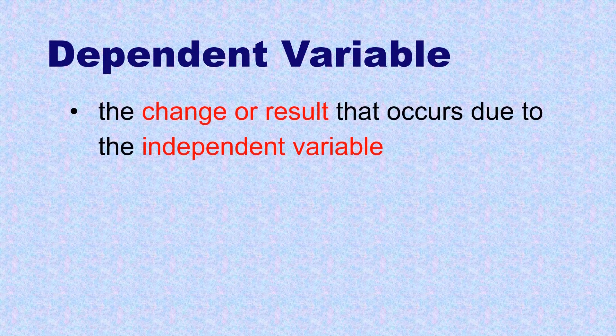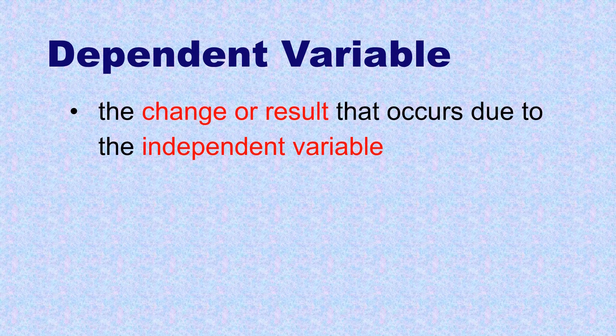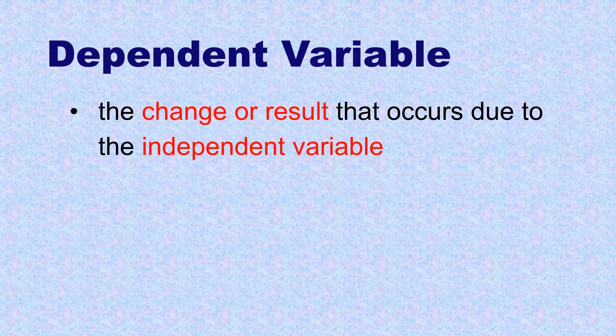Dependent variable is the change or result that occurs due to the independent variable. For example,